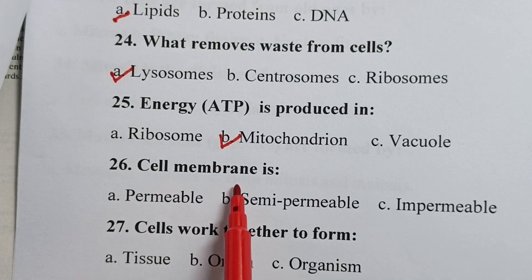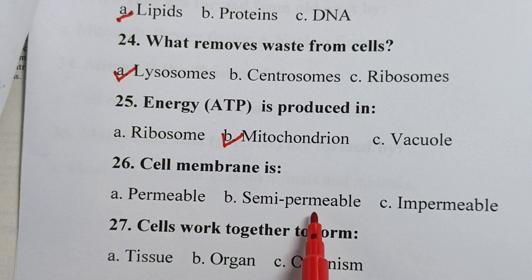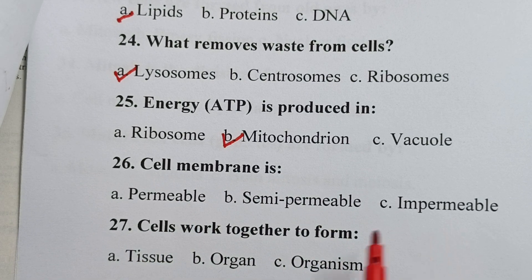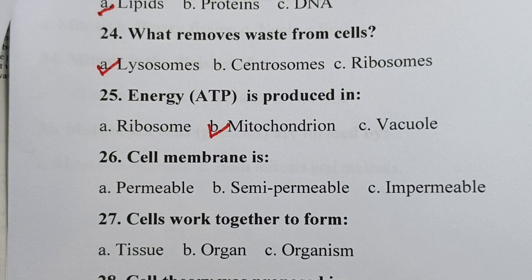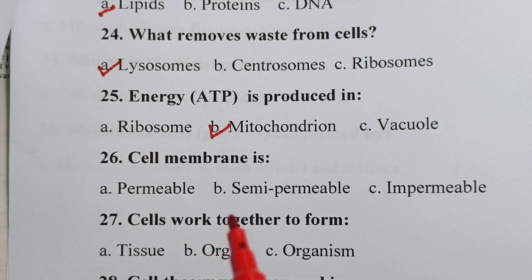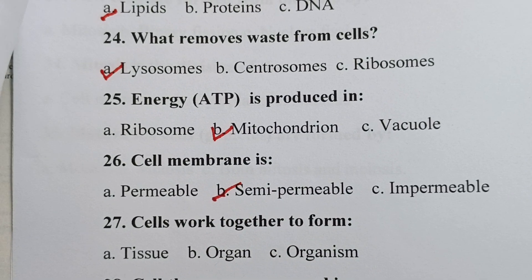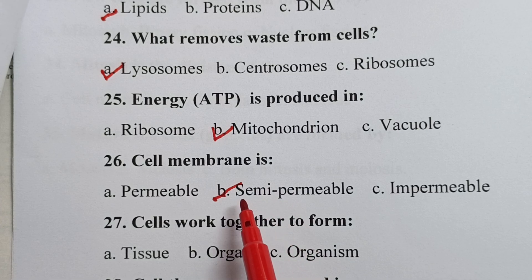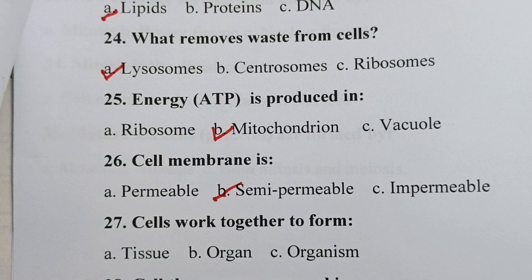Question twenty-six: cell membrane is — is it permeable, semi-permeable, or impermeable? Your correct answer is semi-permeable. The cell membrane does not allow just any kind of substance to move in or out; it allows only certain substances, and this is why it is described as semi-permeable.